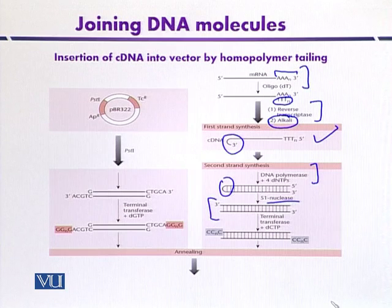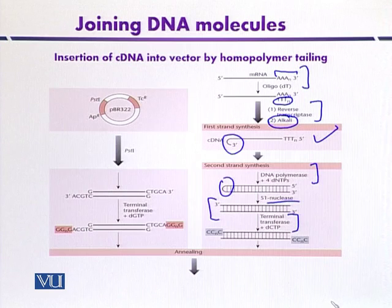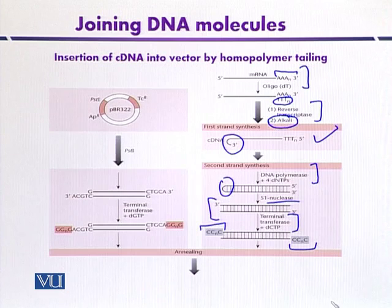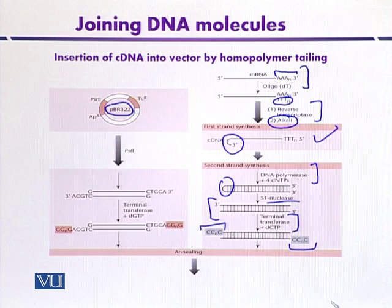This cDNA is treated with terminal transferase so that it can introduce, for example, cytosine homopolymer tails at the 3' end. On the other hand, the vector DNA can also be used to form homopolymer tails. The example here is a plasmid called pBR322, which is a very good example of a plasmid vector frequently used in gene manipulation procedures.